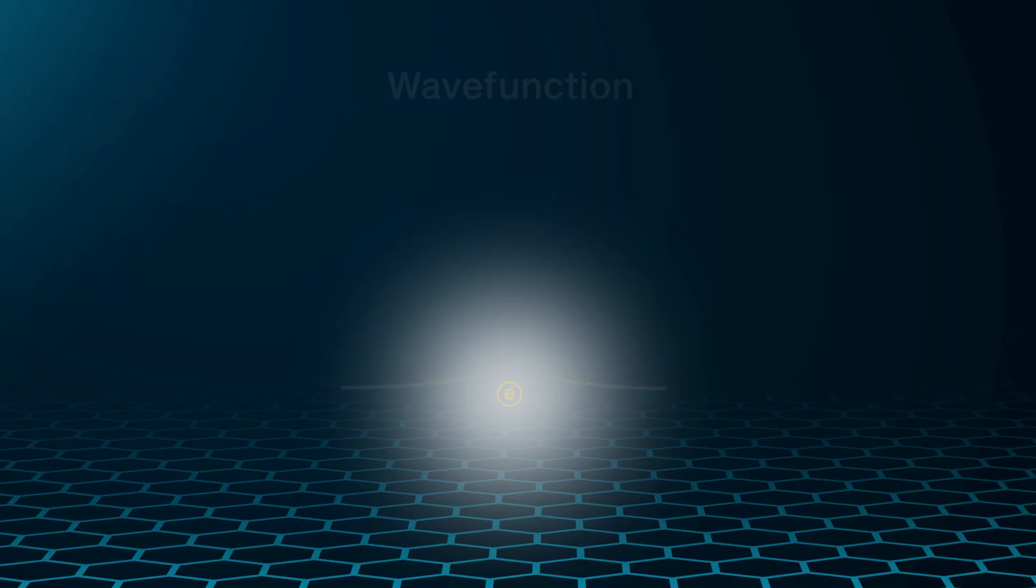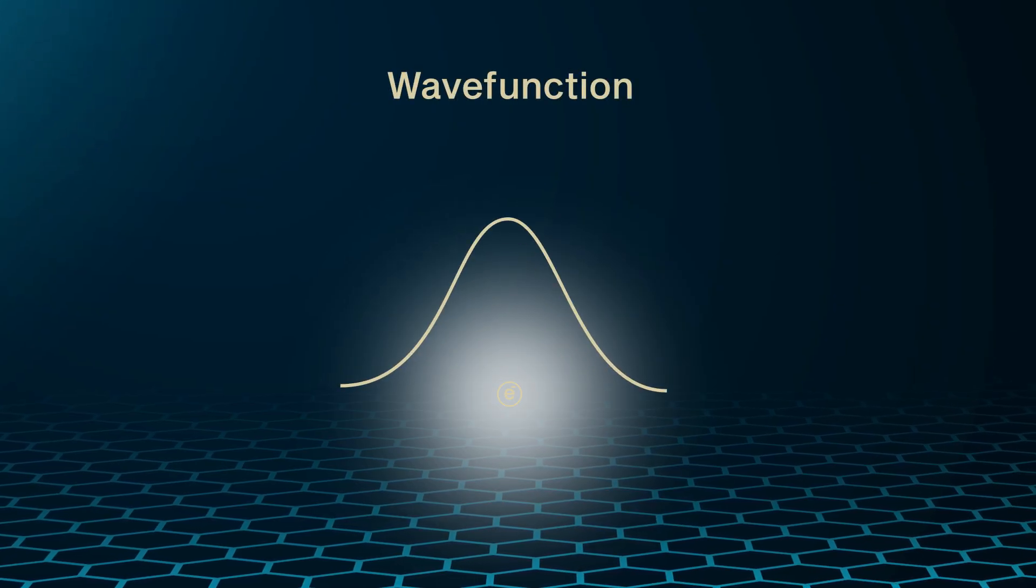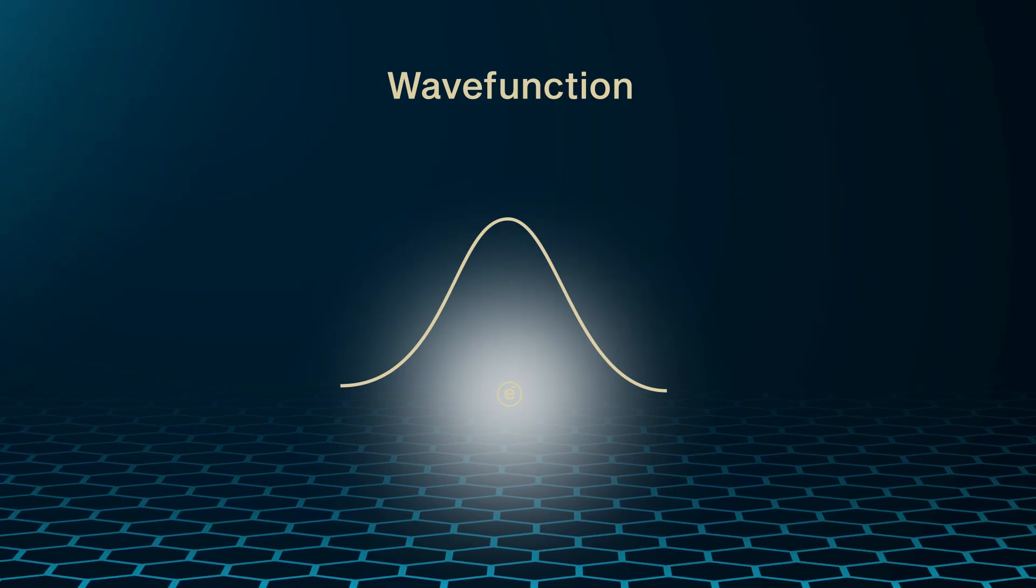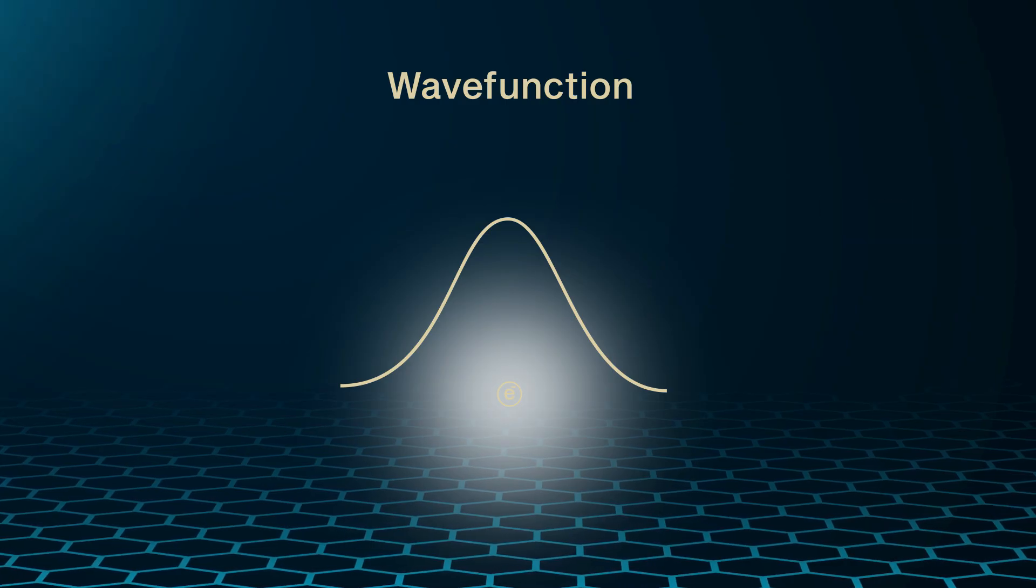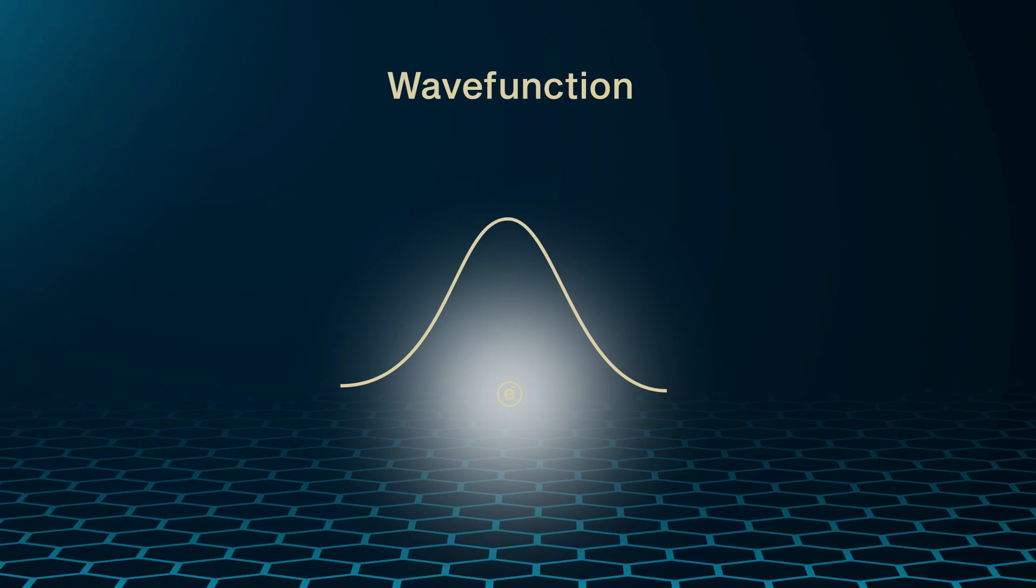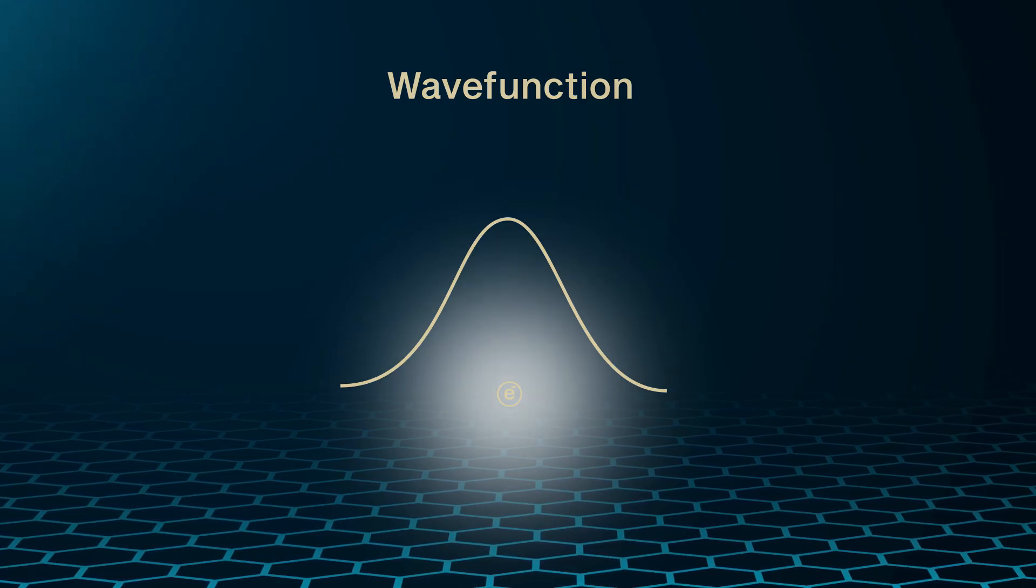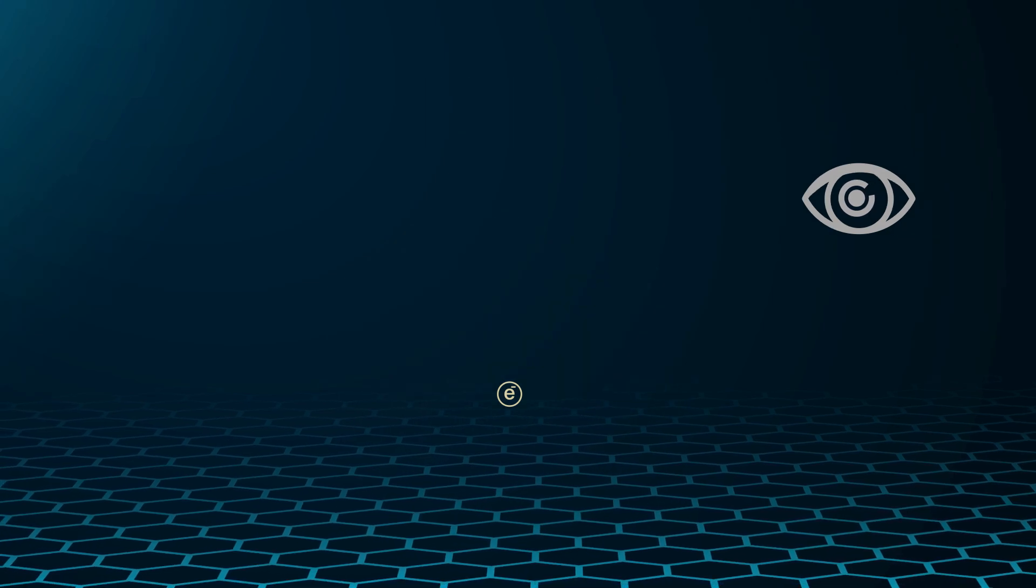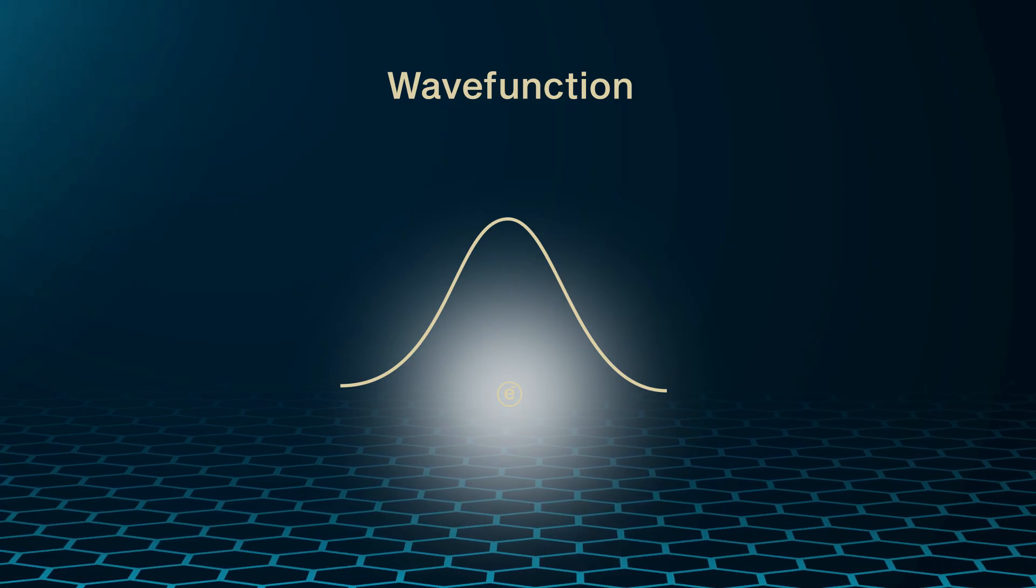The region of space where the electron might be is determined by a single function called the wave function. And it doesn't determine just where the electron is, but also everything else about the electron, like its speed and energy. It's called wave function for a reason. It has properties of waves, but it's not really easy to understand what this wave function actually represents. Mostly because we cannot directly see or measure the wave function.